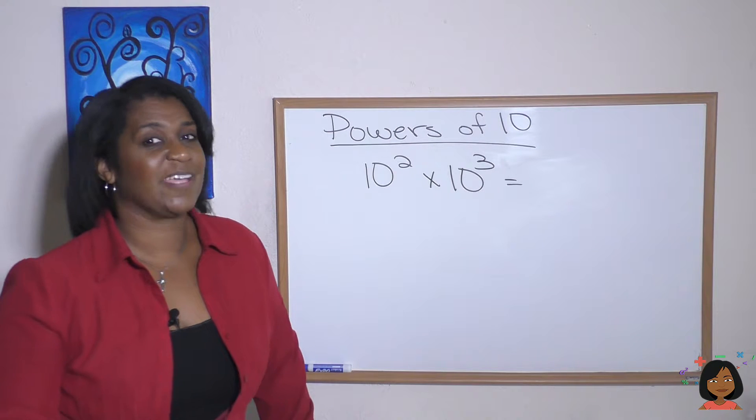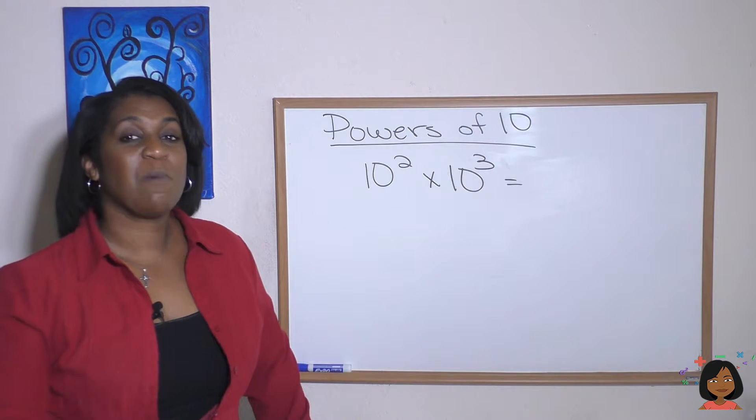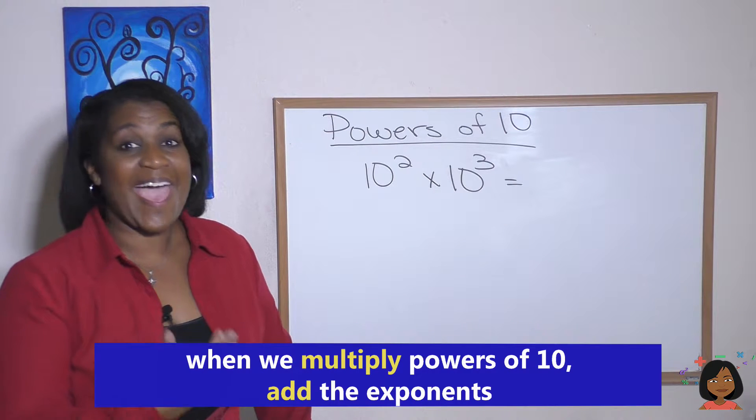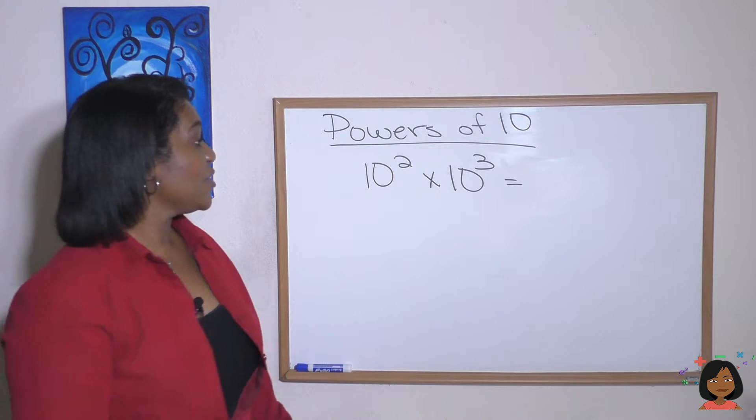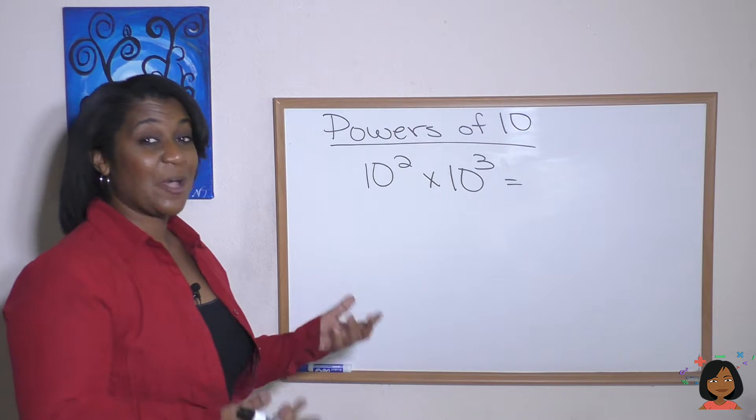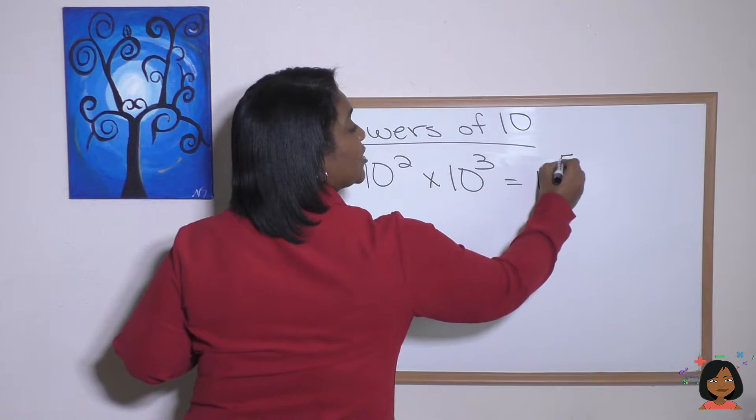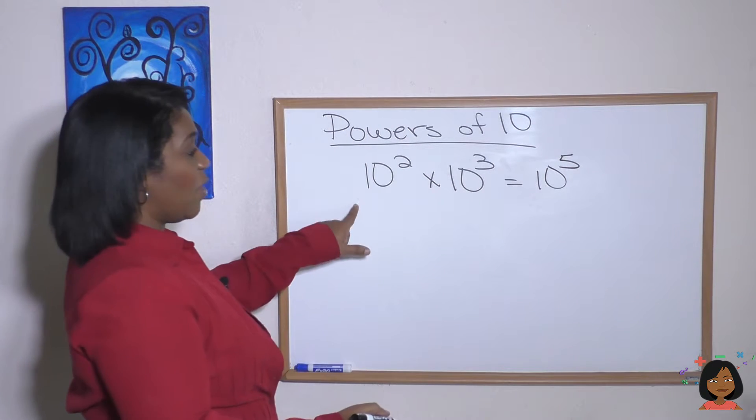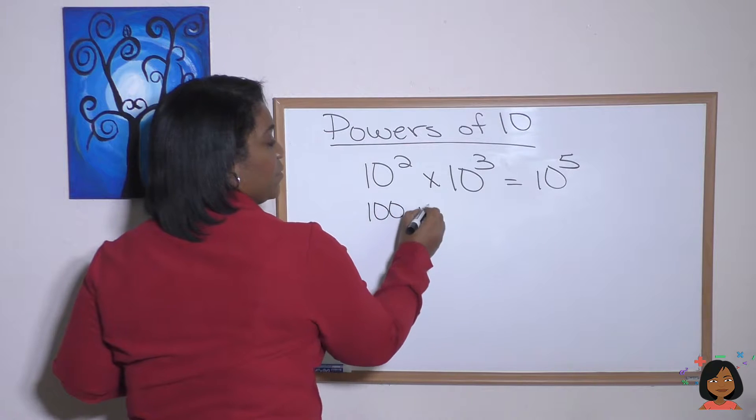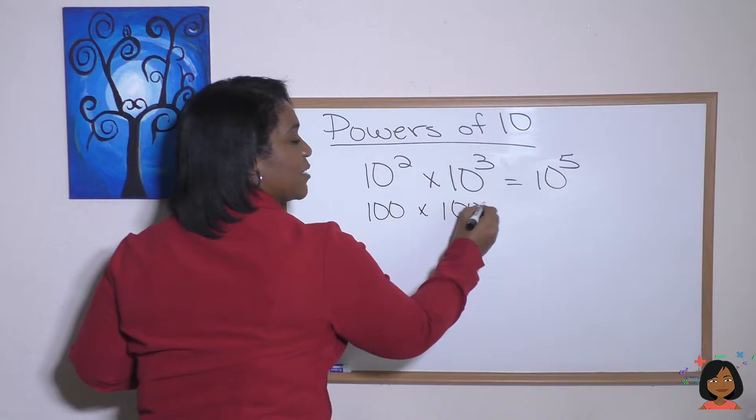Here's a rule for multiplying powers of 10. When we multiply powers of 10, we only have to add the exponents together. So 10 to the second power, 10 to the third power is going to be 10 to the fifth power. And let's actually show you how that works. Well, we know that 10 to the second power has two zeros in it, which is 100. And to the third power has three zeros in it.